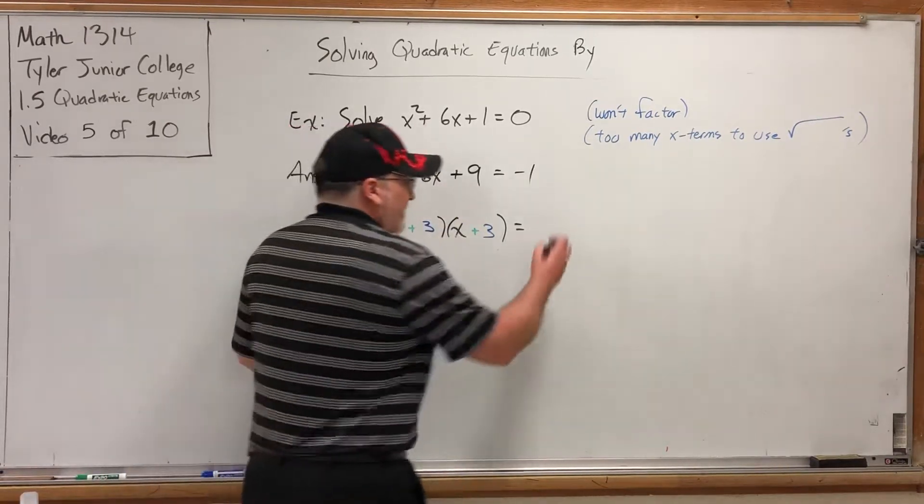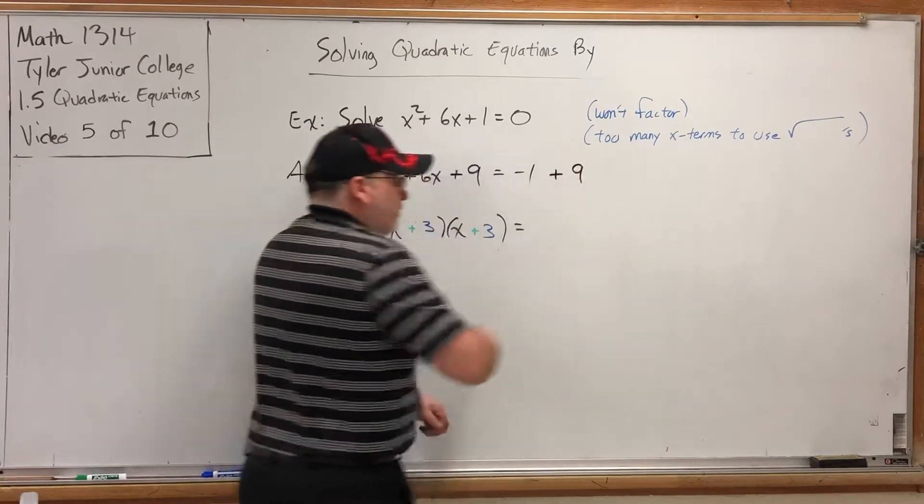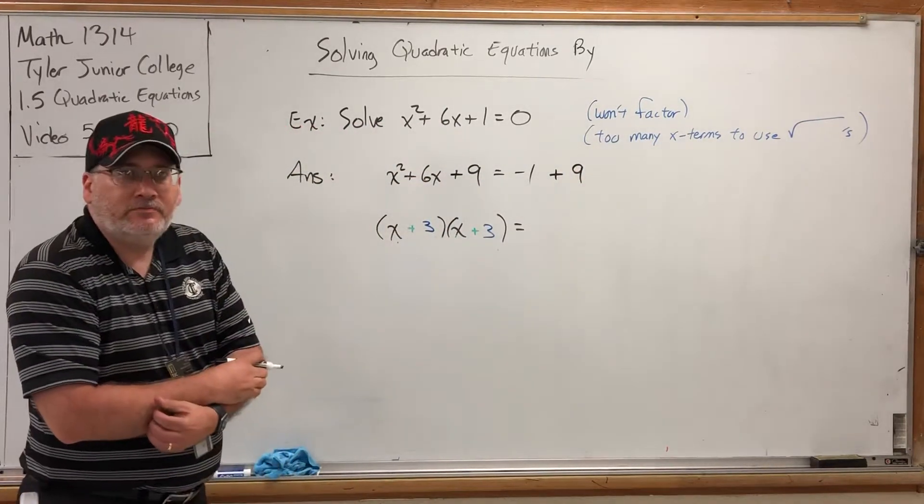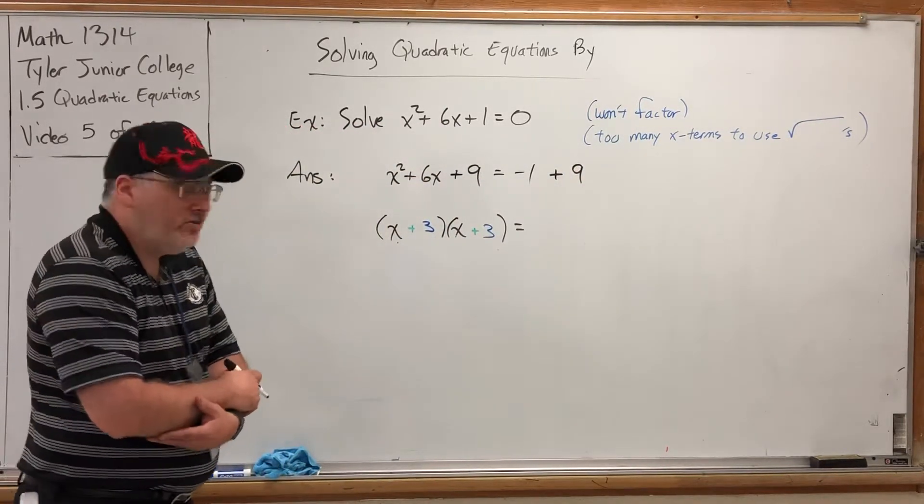So if I'm going to add a 9 here because I want a 9 there, then I also have to add a 9 here. Now, what does that get us?